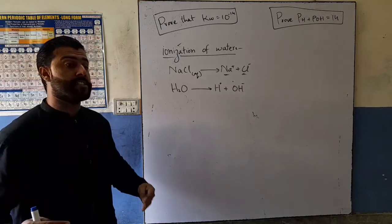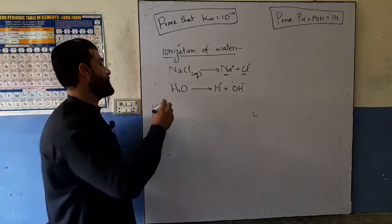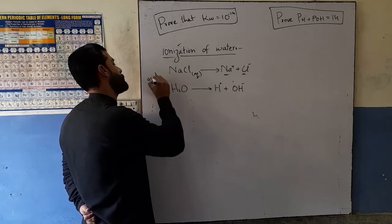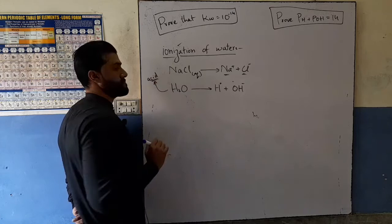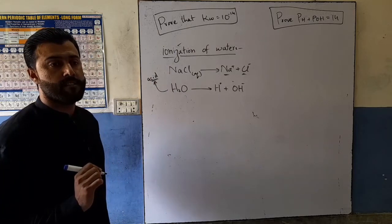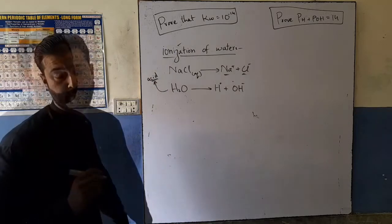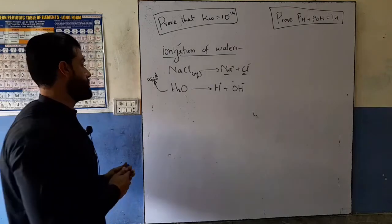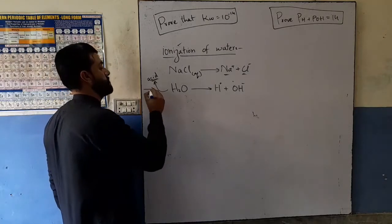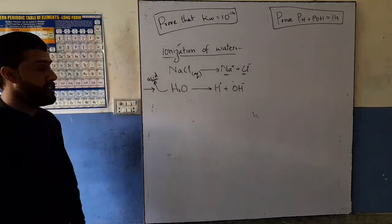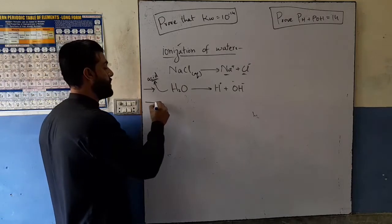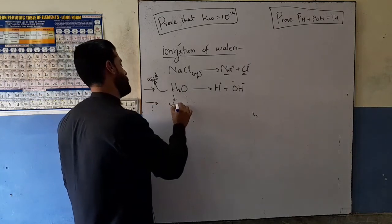For ionization to occur, we add a little bit of acid to the water. This is called acidified water. Point number two: if we add acid to distilled water, it cannot conduct current on its own.